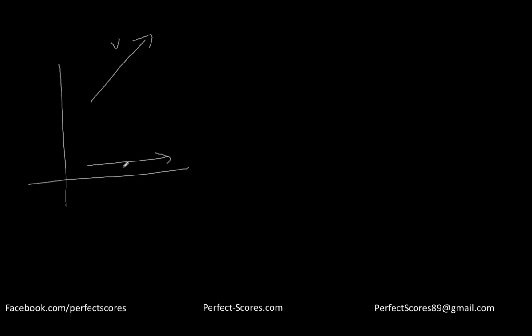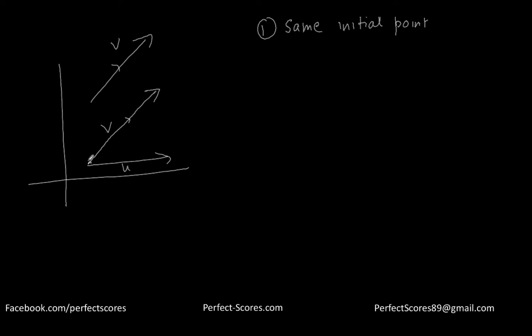To start, I'm going to assume two different vectors. Let's suppose this is the vector plane and we have two vectors — this is vector v and this is vector u. Step one is to have both vectors share the same initial point. So for scalar multiplication to happen, both vectors should have the same initial point, and the angle between the two vectors we call theta.